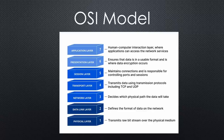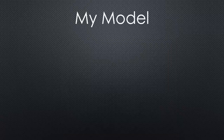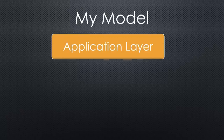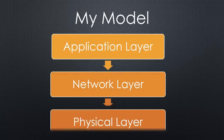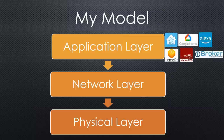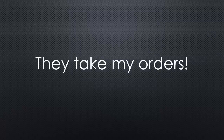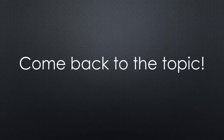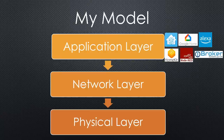I will use a model borrowed from the well-known OSI model, but my model has only three layers: application layer, network layer, and physical layer. Home Assistant, Apple's Smart Home, Google Home, and so on are applications that interact with us and do some automation if we want. The internet traffic based on IP, including TCP and UDP, is placed on the network layer.